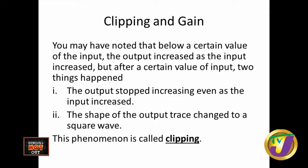So to summarize: below a certain value of the input, the output increased as the input increased. But after a certain value of input, two things happened — the output stopped increasing even as the input increased, and the shape of the output trace changed to a square wave. This phenomenon is called clipping.